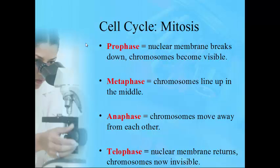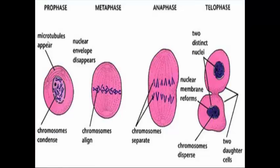In anaphase, the chromosomes start to pull apart from each other — A for anaphase, A for away. In telophase, the nuclear membrane returns and the chromosomes become invisible once again. Here's an illustration: in prophase, the nuclear envelope breaks down and chromosomes condense so we can see them. In metaphase, chromosomes line up in the middle — they look almost like stitches. In anaphase, they pull apart. In telophase, you almost have two distinct nuclei.